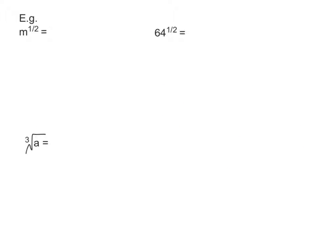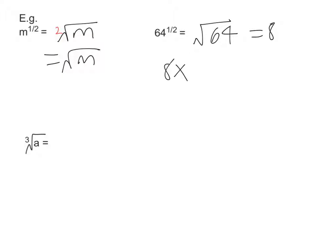Here are a couple of examples about changing from one form to the other. In the first example I've got it in index form. If I want to rewrite that as surd form I simply write the square root of m, because it's a half power. Note we don't need to put a little 2 here — in maths if it's missing we know it's a 2, so the square root of m is always the second root of m. In the next example, 64 to the half power means square root, so I write square root of 64. The answer is 8, because 8 times 8 equals 64.